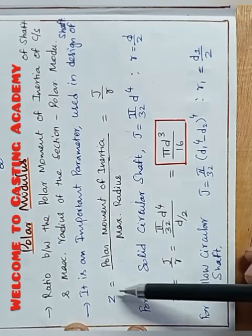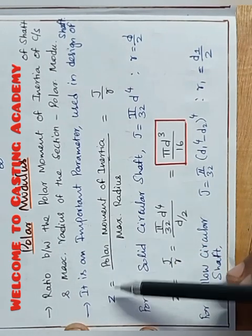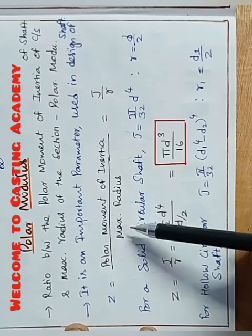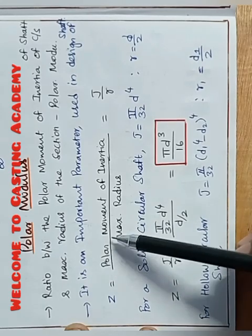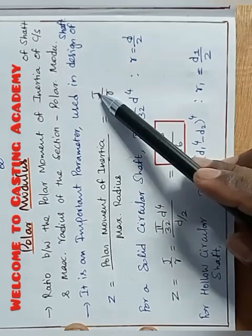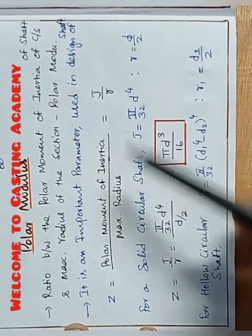So here consider Zp equal to polar modulus. That is equal to polar moment of inertia J divided by maximum radius R.